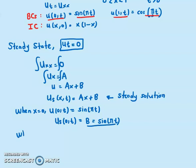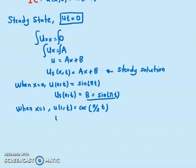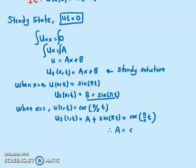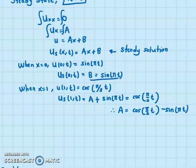When x = 1, the boundary condition is u(1,t) = cos(π/2 · t). So u_s(1,t) = a + b = a + sin(πt) = cos(π/2 · t). Therefore, a = cos(π/2 · t) − sin(πt).